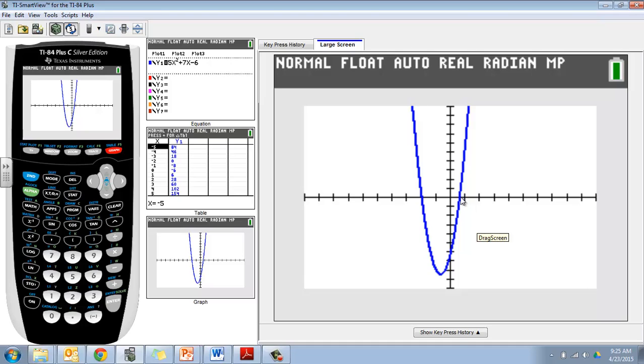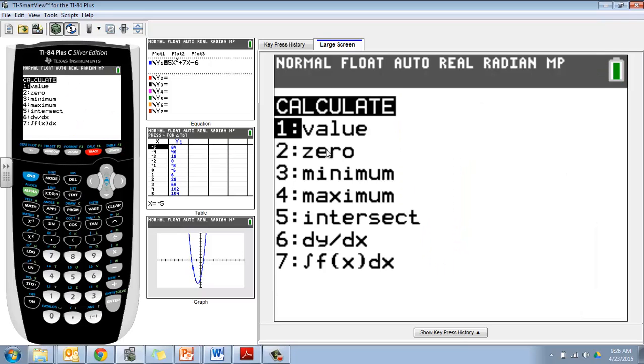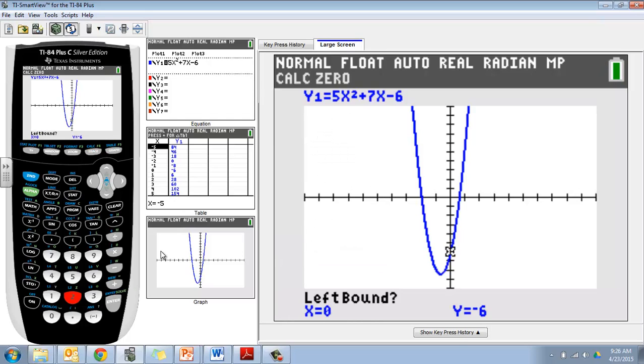The other one I'm going to have to use a function on my calculator to figure out. So I'm going to hit second, trace, that's my calculate menu, and I want to find the zeros so I'm going to choose option 2. Now it's asking for my left bound.